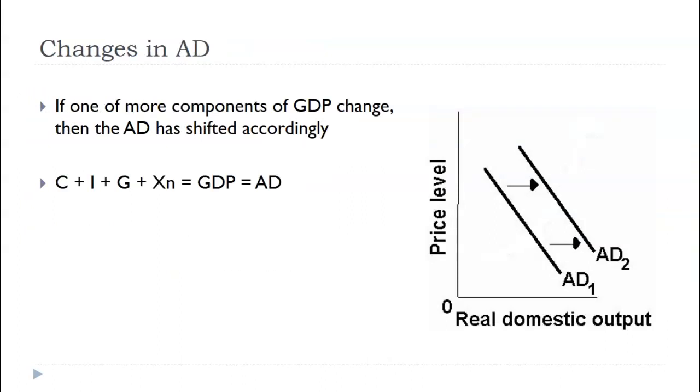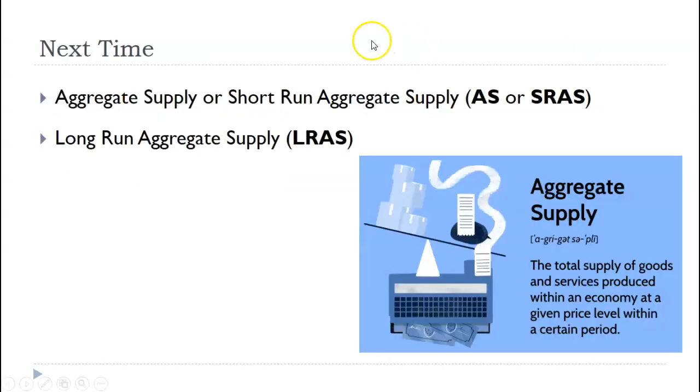So that was it for today. Talking about the aggregate demand curve, we want to make sure we understand the importance of the different axes. It can shift around based on the expenditure approach. And it is downward sloping because of the real balance effect, the interest rate effect, and the foreign purchase effect. All right. Until next time, bye.